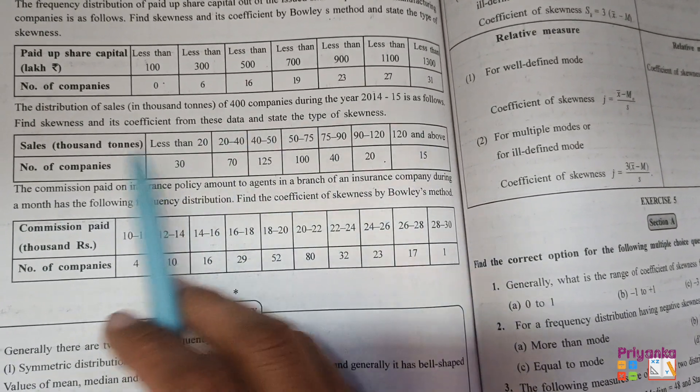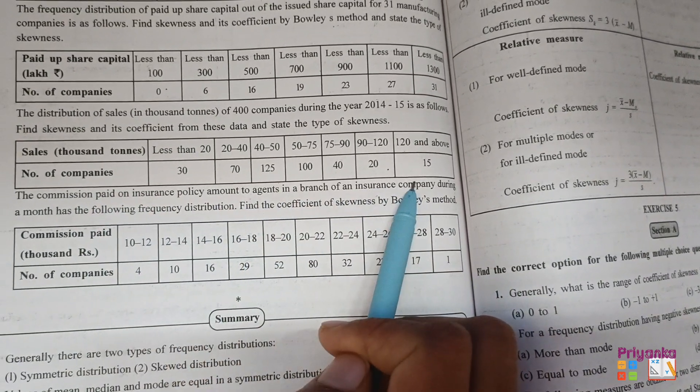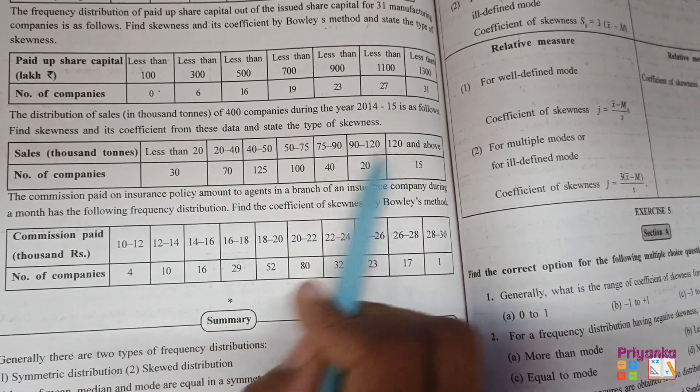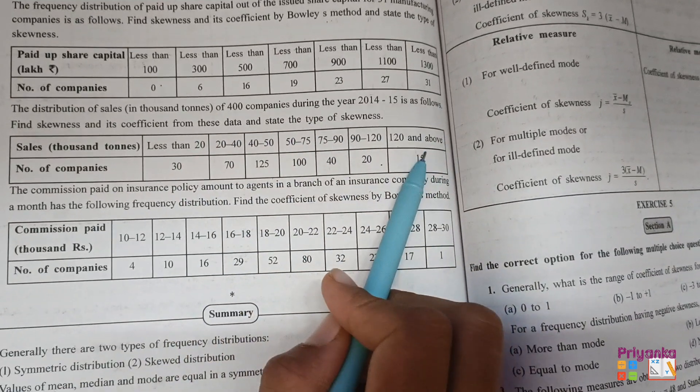Then 120 and above, and the number of companies as the frequency are given. So here there is no need to make any classes. Only the first and the last one is there.